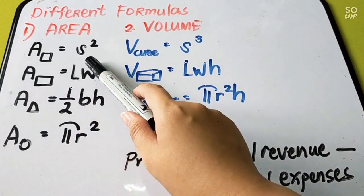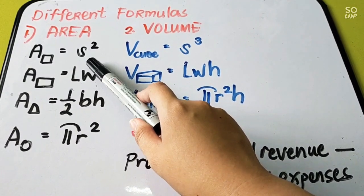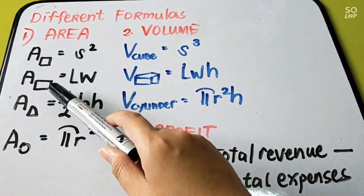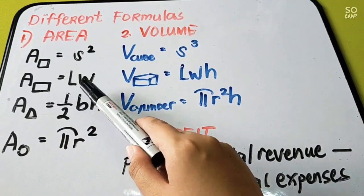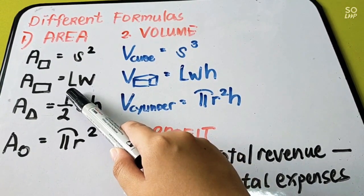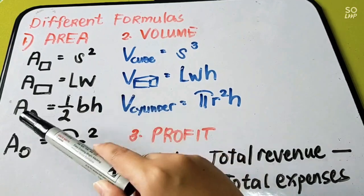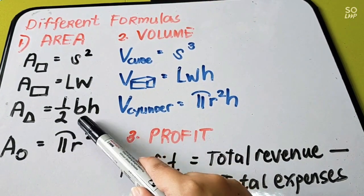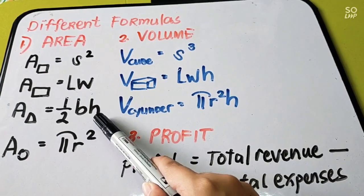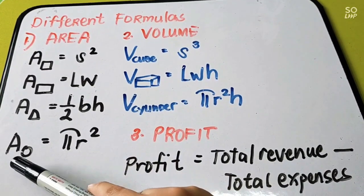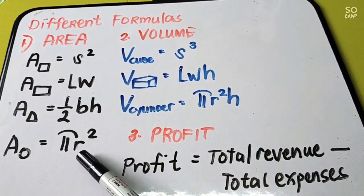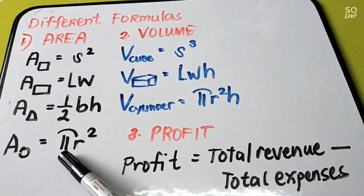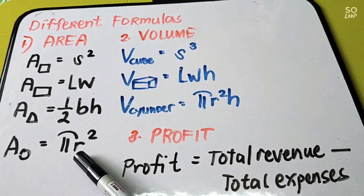The area of a square is S squared, where S means the side. The area of a rectangle is A = LW, where L means the length and W means the width. The area of a triangle is equal to 1/2 BH, where B means the base and H means the height. The area of a circle is equal to π R², where π is equal to 3.1416 and R is the radius.